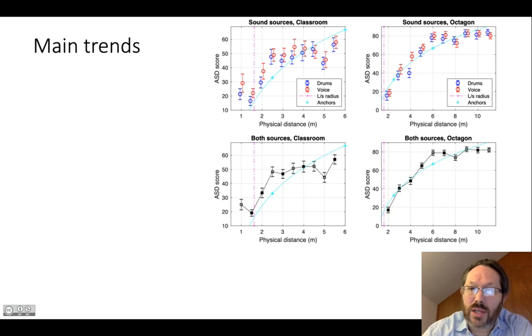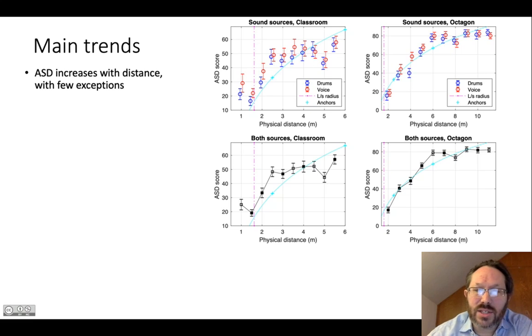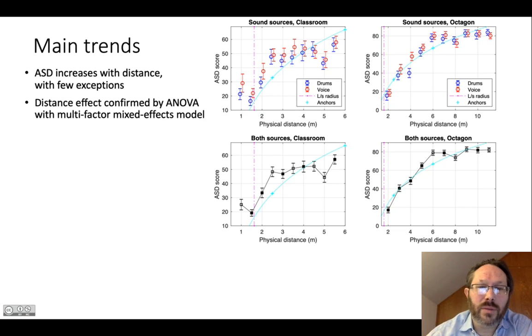So what are the main trends? Shown here, I've got the ratings of perceived distance against physical distance for the classroom on the left and the octagon on the right. The top graphs show a breakdown of the drums and voice in these error bars, whereas on the bottom, the results combined. Also shown is a log distance curve through the anchors as a reference for both of these. And the magenta dash dot line shows the actual physical loudspeaker radius in the reproduction setup. We can see the main trend is that we have ratings of perceived distance increasing with the physical distance, with a few exceptions that we'll look at in a bit more detail in a moment. And an ANOVA with a multi-factor mixed effects model also confirmed an effect for distance, as well as an interaction for distance and room.